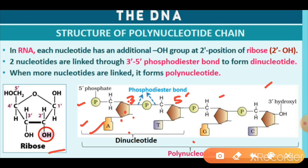Nucleotides are linked through 3'-5' phosphodiester bonds — the bond between carbon number 3 of one nucleotide and carbon number 5 of the next nucleotide — forming the polynucleotide chain.